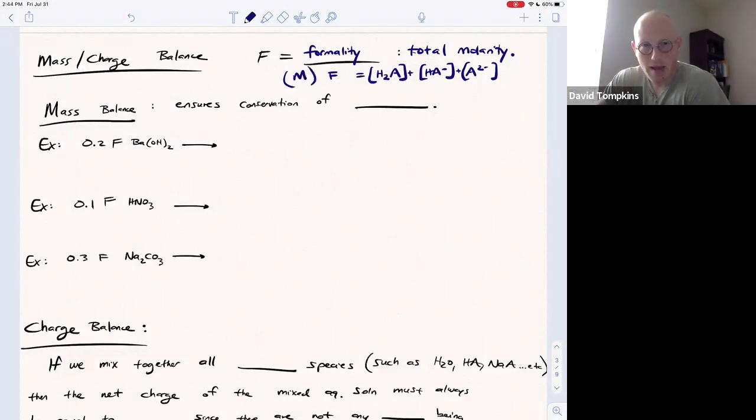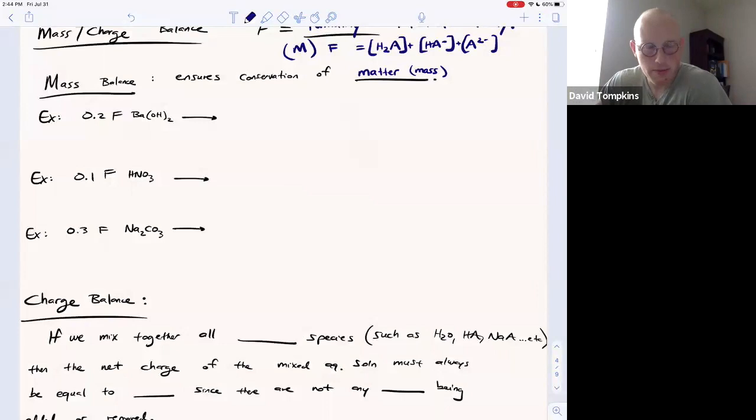And the mass balance idea is just going to ensure that we obey laws of conservation of matter or mass. So I'll show you how to set up some mass balance equations. For example, if you have 0.2 formal barium hydroxide, this is going to dissociate into two things in solution, barium two plus and two hydroxide ions.